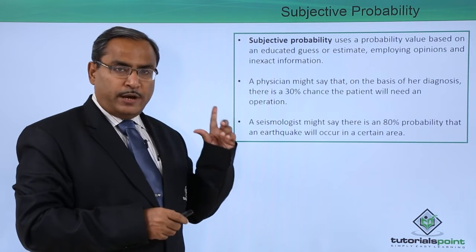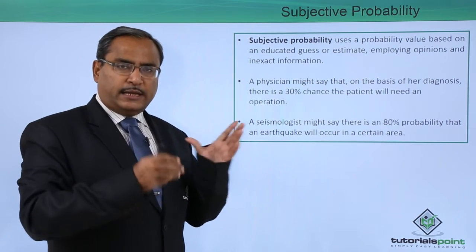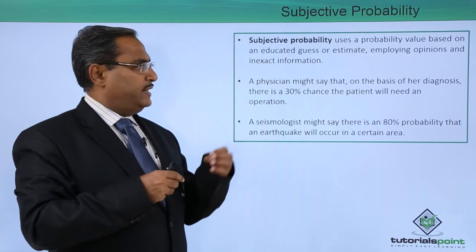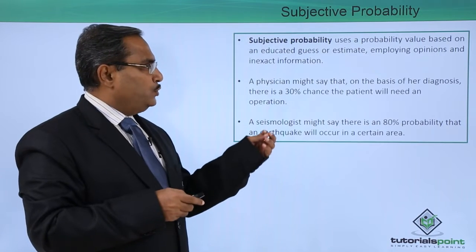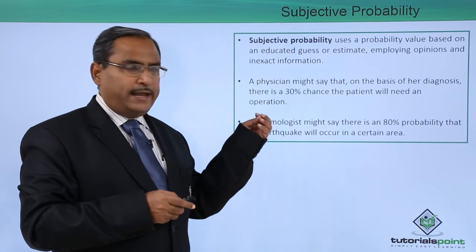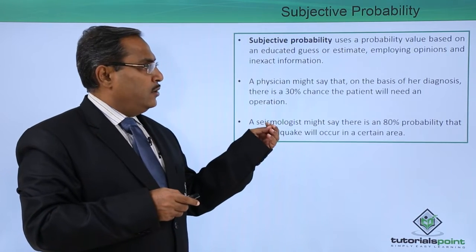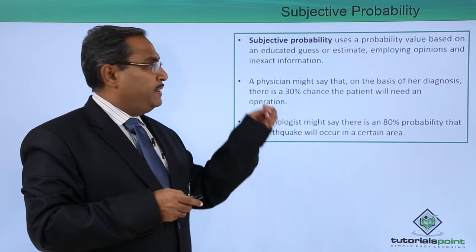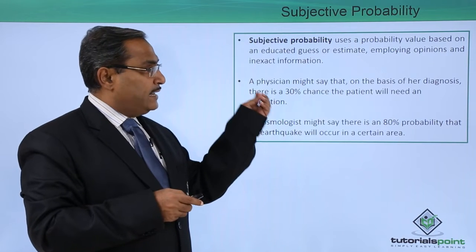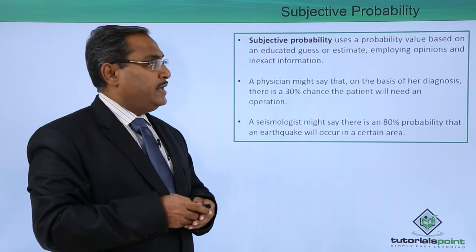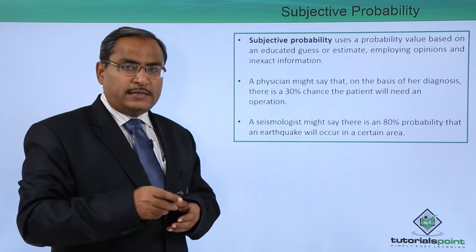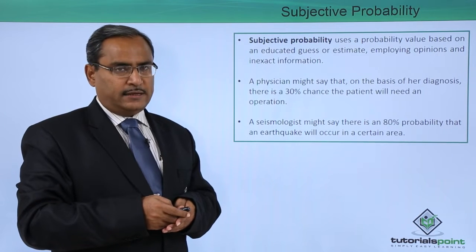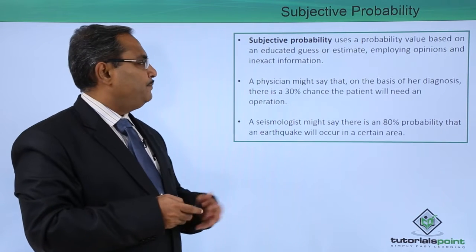In the case of subjective probability, it is the probability of occurrence of an event which will be calculated or guessed on some estimate with some educated guess, employing some opinions and inexact information.